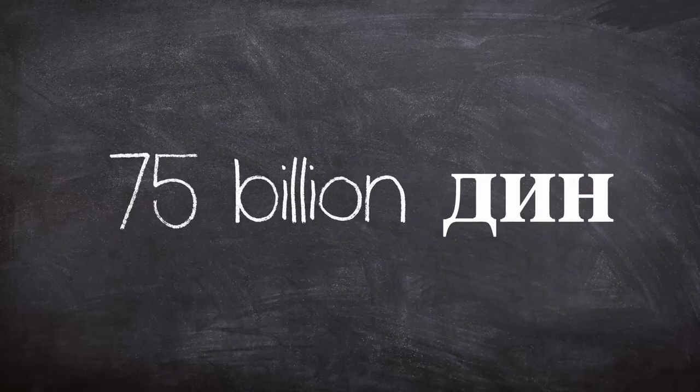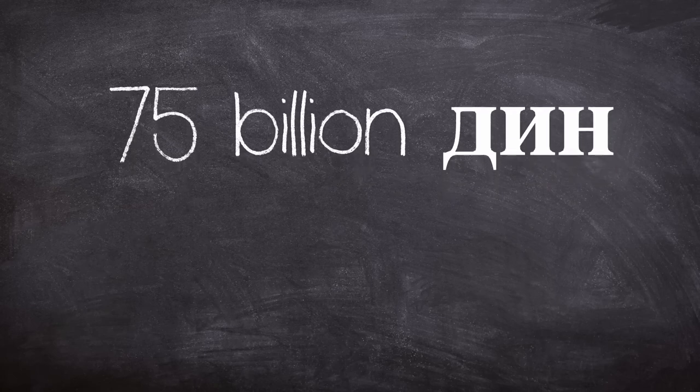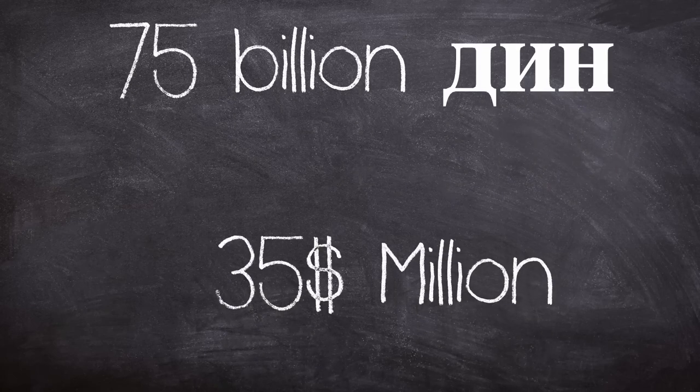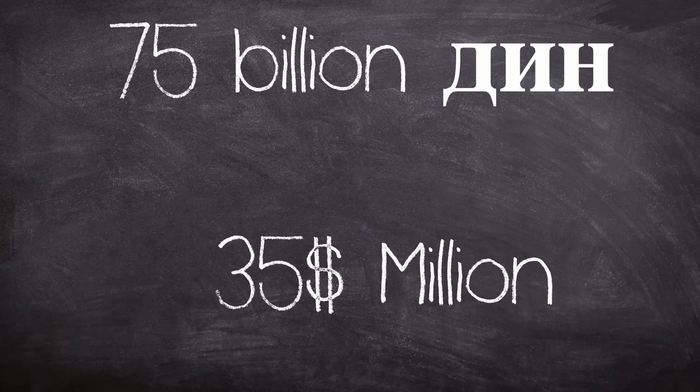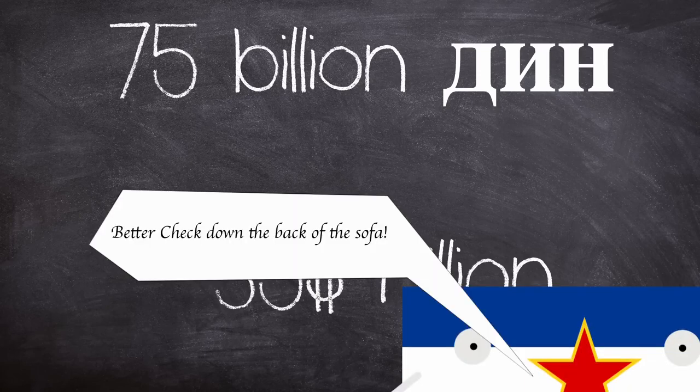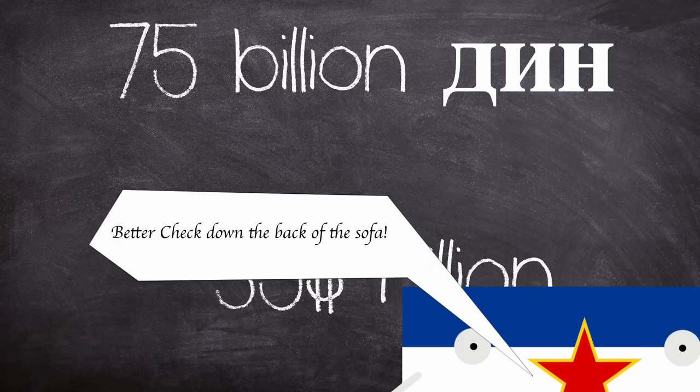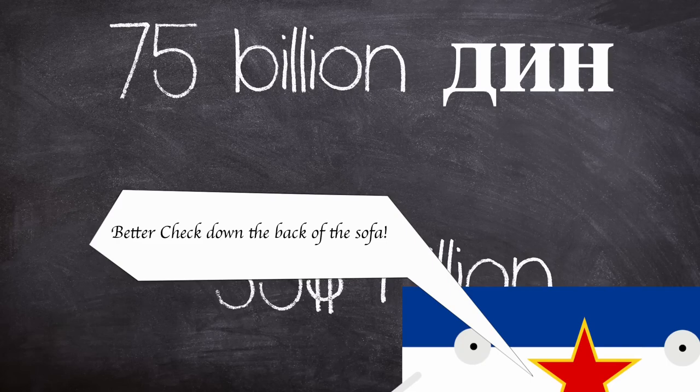75 billion dinars, about 35 million dollars at the 1953 exchange rate, was spent on building and operating the country's fledgling nuclear industry. This constituted a significant part of the country's GDP.